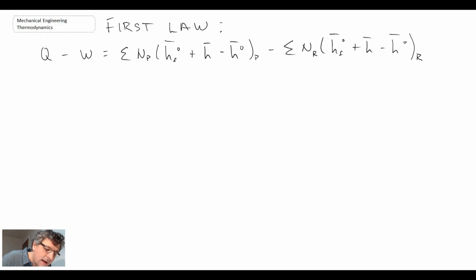We have our products and reactants. The first thing we can do is neglect work because it's a steady flow system. There are no moving boundaries or anything like that, so work disappears. The next thing when you're solving these problems—you've got to be careful. There are different places you can make mistakes.